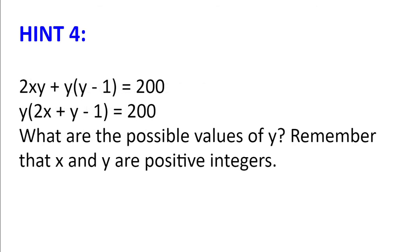Hint number four. So the equation is 2xy plus y multiplied by y minus one equals 200, which you can also rewrite as y multiplied by 2x plus y minus one equals 200. What are the possible values of y? Remember that x and y are positive integers.